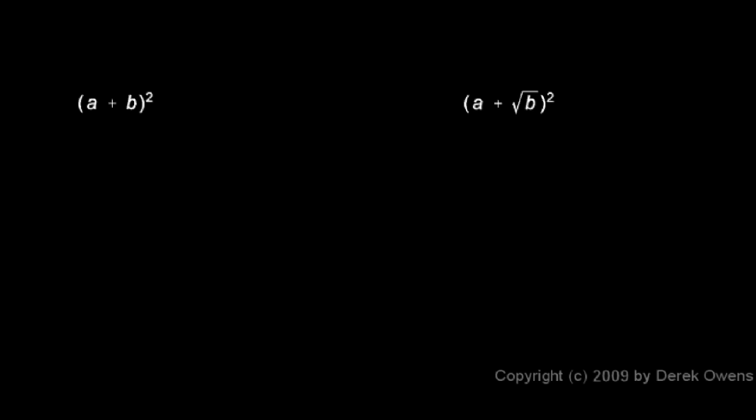This example, a plus b squared, doesn't have anything to do with square roots, but it reminds us how to square a binomial, which we'll be doing in later examples. So remember that a plus b squared is the same as a plus b times a plus b.